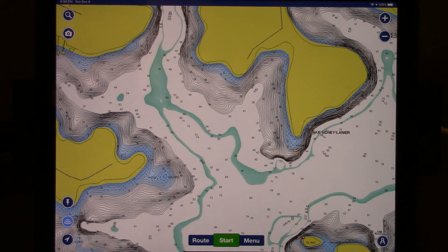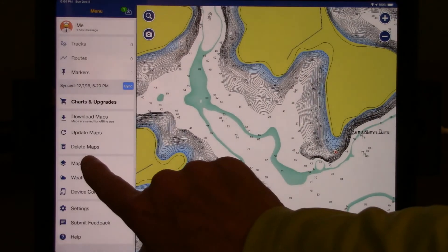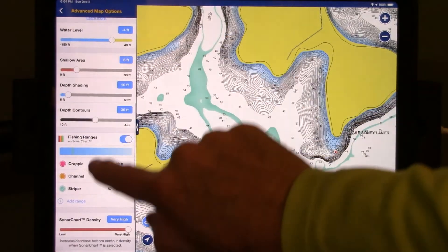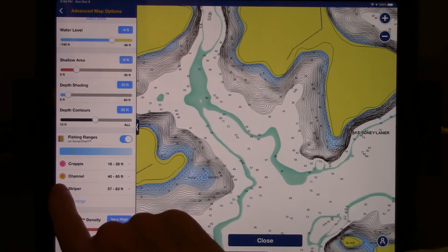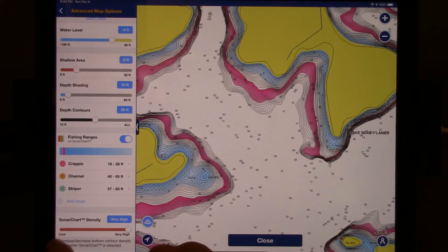Once you've defined multiple fishing ranges, it's easy to switch back and forth. Again, all you have to do is select menu, map options, scroll down to where it says fishing ranges, turn off the range that you're not interested in, and turn on the range that you are interested in.